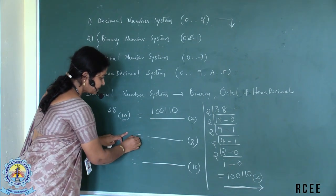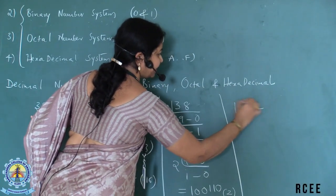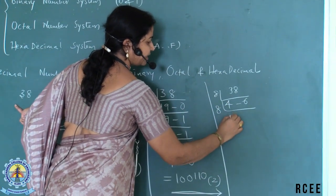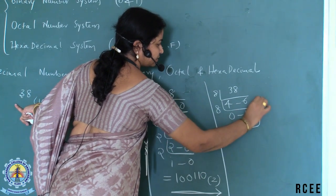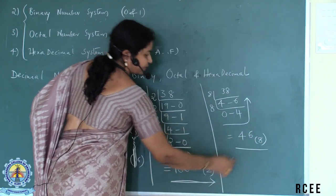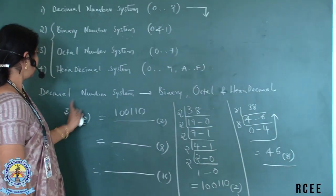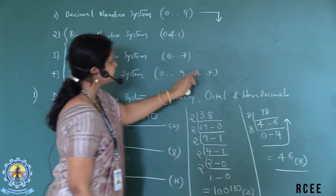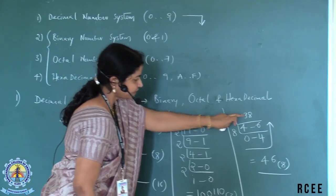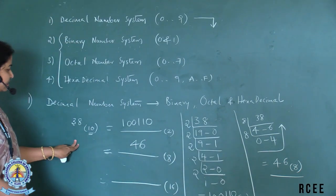Similarly, to get the octal format from the 38, we will divide by 8. So 38, 4, 8, 32, 6 is the reminder. Again, divide. So, 0 and 4. So if you observe, we get 46 to base 8. You can check whether the result is equivalent to octal or not. You observe, the digits are 4 and 6 which is in the range of 0 and 7, equivalent to 38 to base 10. So, 46 to base 8 is the octal format.